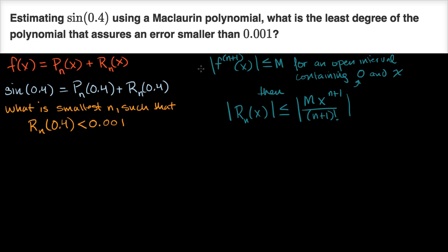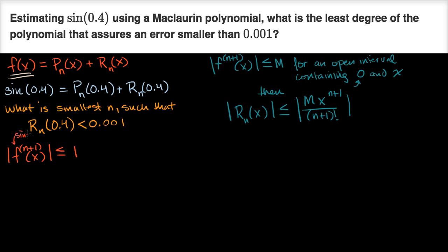How do we apply this to the problem? Think about the derivatives of sine. The absolute value of sine is less than or equal to one; its derivative is cosine of x, whose absolute value is also bounded by one. So no matter how many times we take the derivative of sine of x, the absolute value of that derivative is less than or equal to one. For f(x) = sine of x, the absolute value of the (n+1)th derivative at any x is less than or equal to one, and this holds over any interval. So our M equals one.